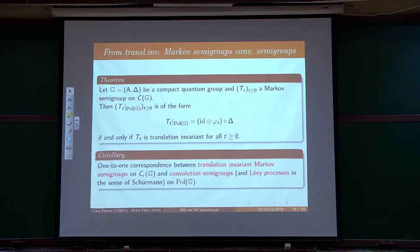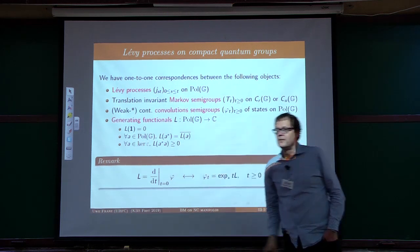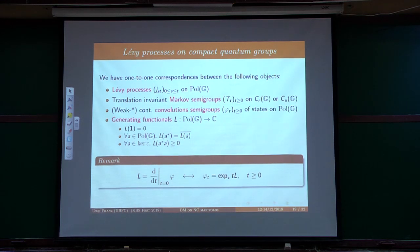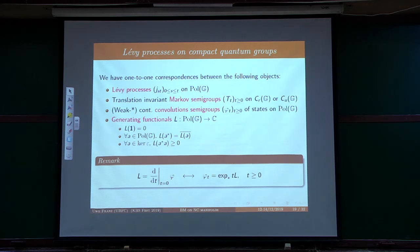Convolution semigroups are characterized by their generators. If we have a convolution semigroup (φ_t), we differentiate at t=0 to get the generating functional. Schürmann showed this works nicely on bialgebras because by the fundamental theorem of coalgebras, we can always restrict to a finite-dimensional subspace. Continuity of semigroups implies differentiability, and the derivative exists. To recover φ_t, you use the exponential series with the convolution product. There is a Schoenberg correspondence: if a functional is normalized (sending the unit to zero), Hermitian, and positive on the kernel of the co-unit, then you get a semigroup of states by passing to the exponentials.